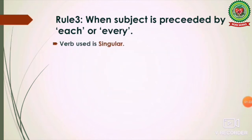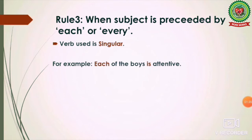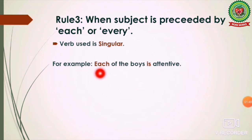The next rule: when the subject is preceded by 'each' or 'every,' the verb used is always singular. For example: 'Each of the boys is attentive.' Here the subject is 'boys,' and even though it is in plural form, it is preceded by 'each,' which makes it a singular subject. So we use 'is' — the singular verb — not 'are.'